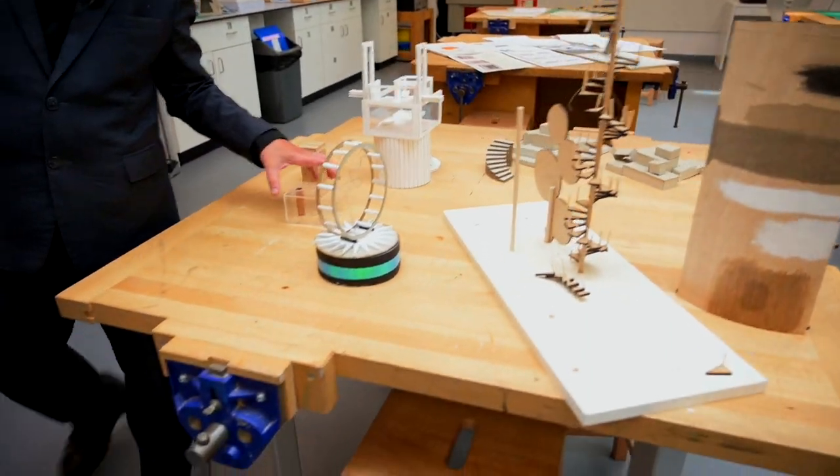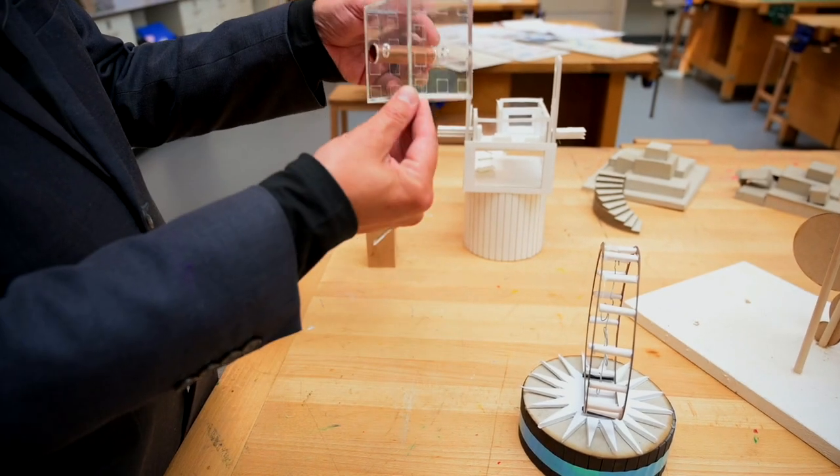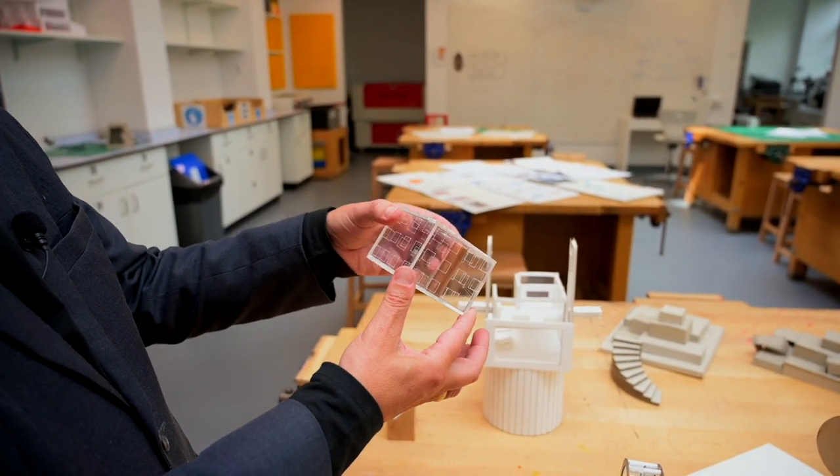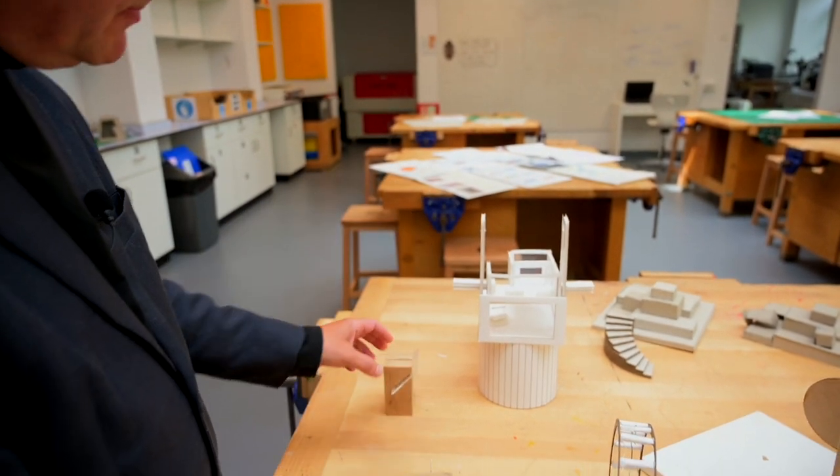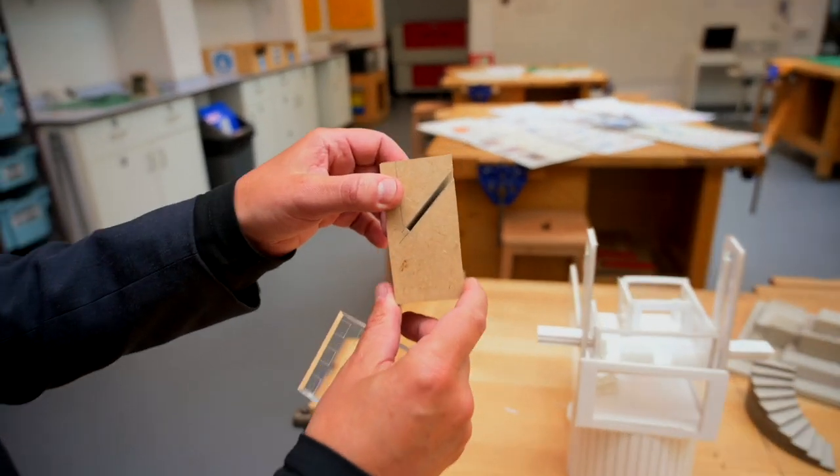Over here we have a few more bits and pieces. Rhea again—Rhea is a very architectural student. She likes everything to be transparent and looks like buildings. You can see a nice little glass box there, but the detail is really clever. She's made what we call a jig here in MDF.